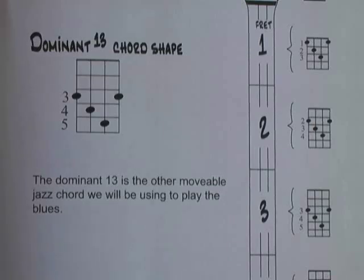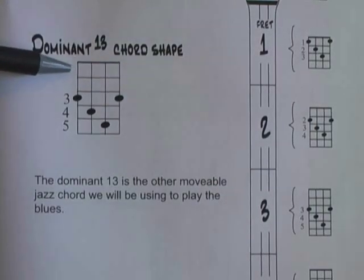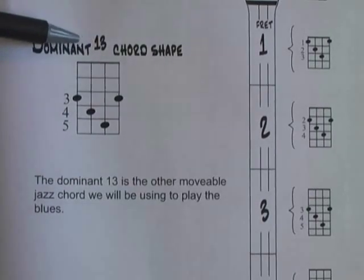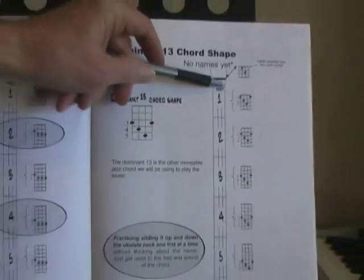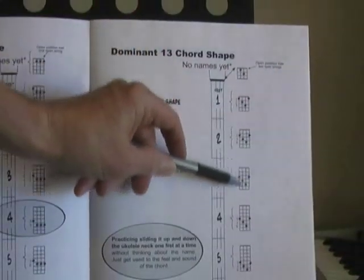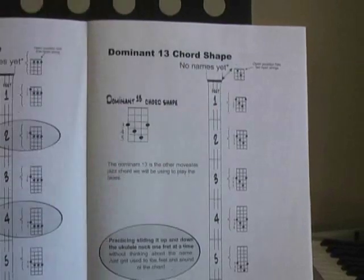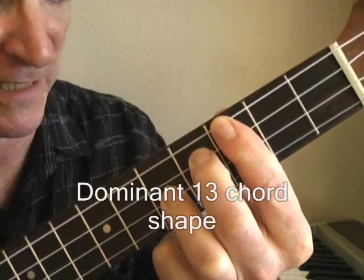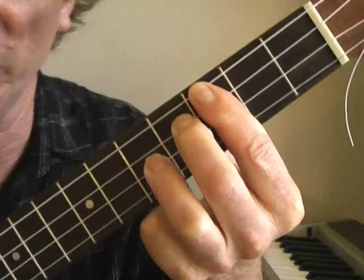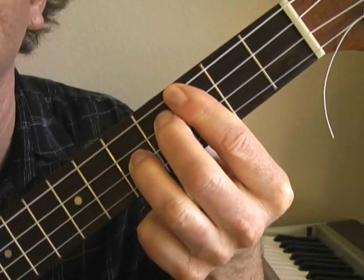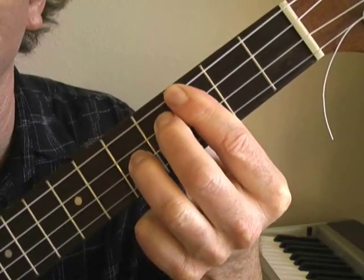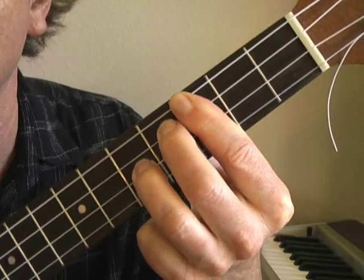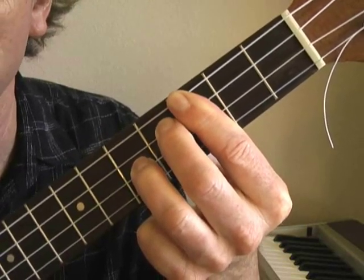Here's the first of our two jazz chord shapes. It's called a dominant 13, or simply a 13 chord. We're going to see how this chord moves up and down the ukulele neck. Here's what it looks like, and here's what it sounds like. That's a C13 — the sound of a dominant 13 chord.